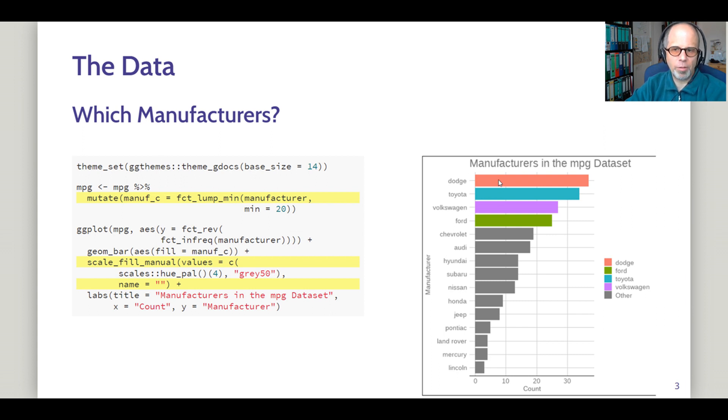I'm using the Google Docs theme from the ggthemes package for the plots. We see there are 15 manufacturers in this dataset. For the following task I wanted to simplify that and reduce the number of manufacturers to five. So we have the top four: Dodge, Toyota, Volkswagen, and Ford. And we recoded all others as others.